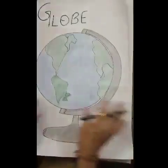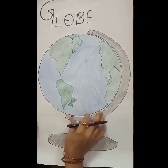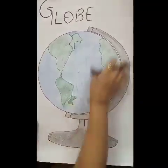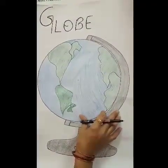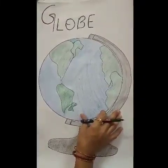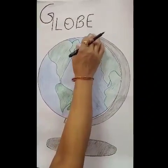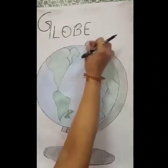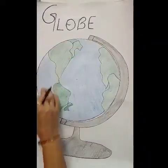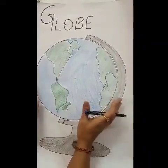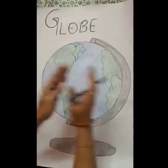Look at this picture — it is a picture of a Globe. Globe is a small model of Earth. It has an imaginary line through which it is fixed in a tilted manner. The globe rotates from west to east.